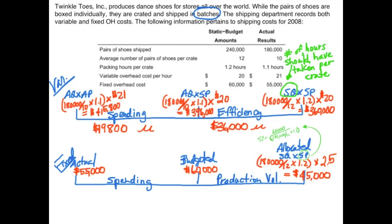Now we can compute our variances for fixed overhead. Our spending variance is the difference between actual and budgeted: $5,000. Since actual fixed costs of $55,000 were less than the budgeted $60,000, that is a good thing — so this is a $5,000 favorable spending variance.